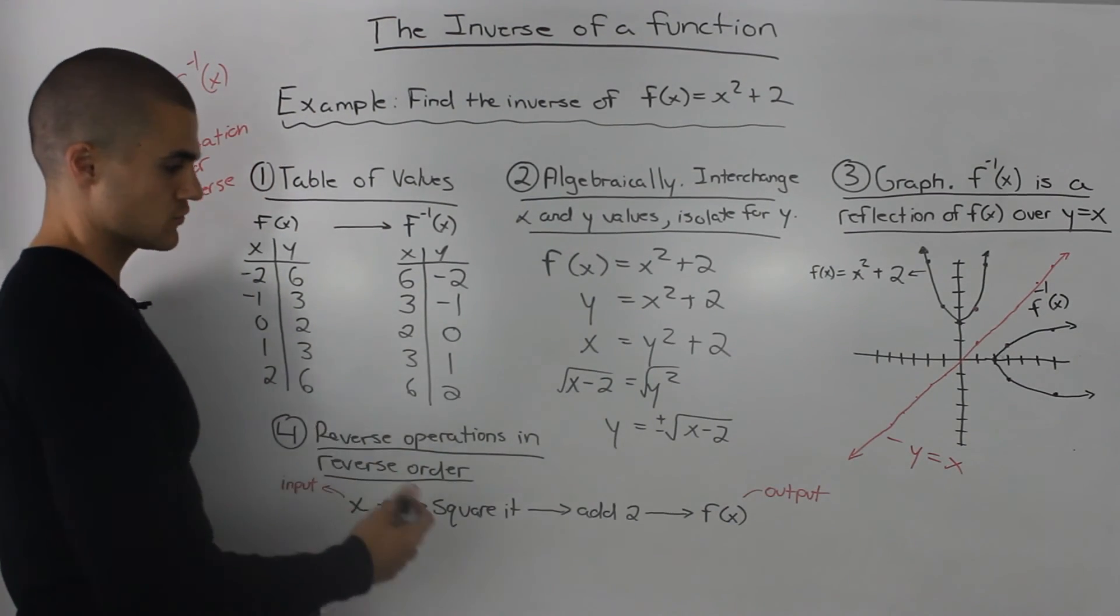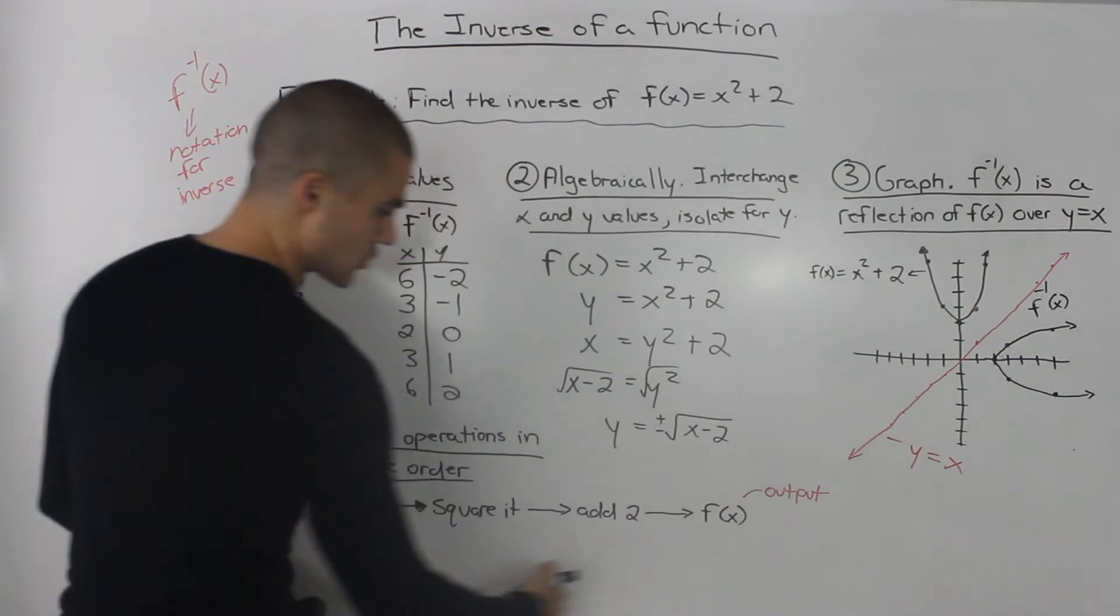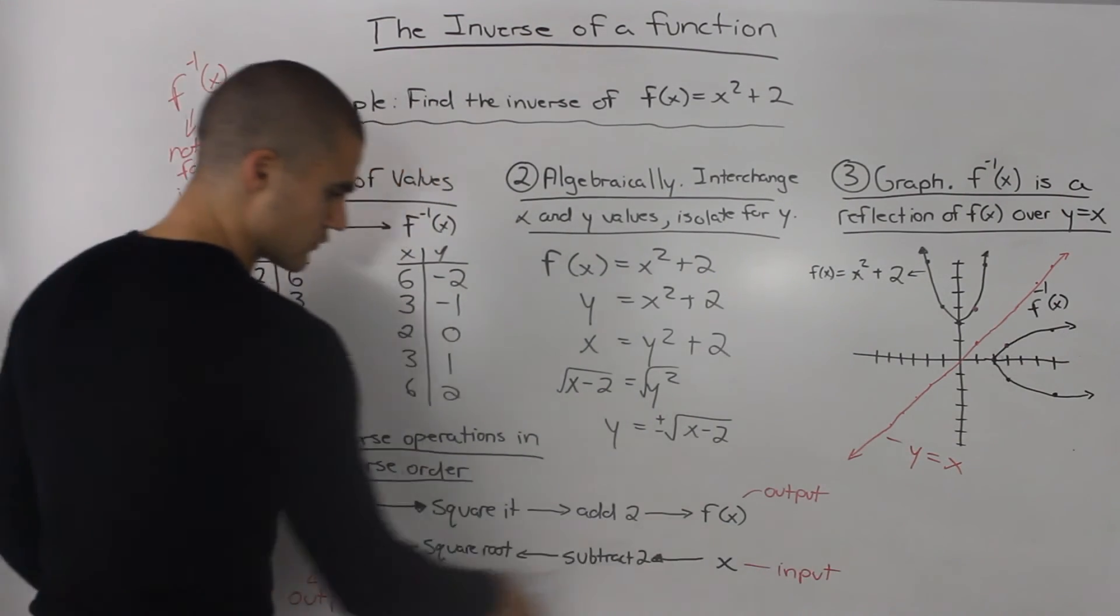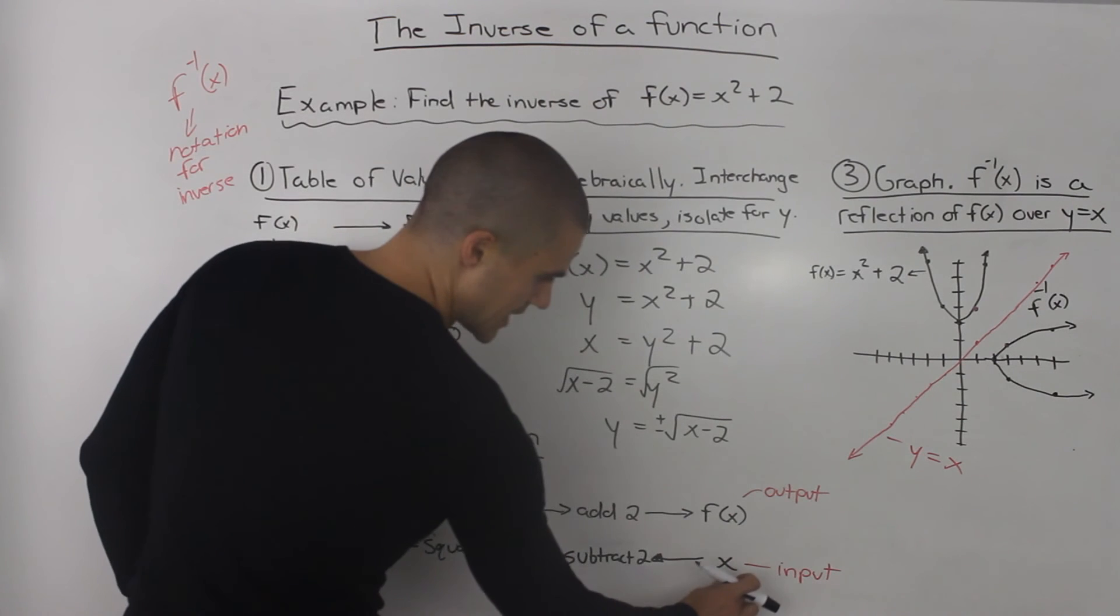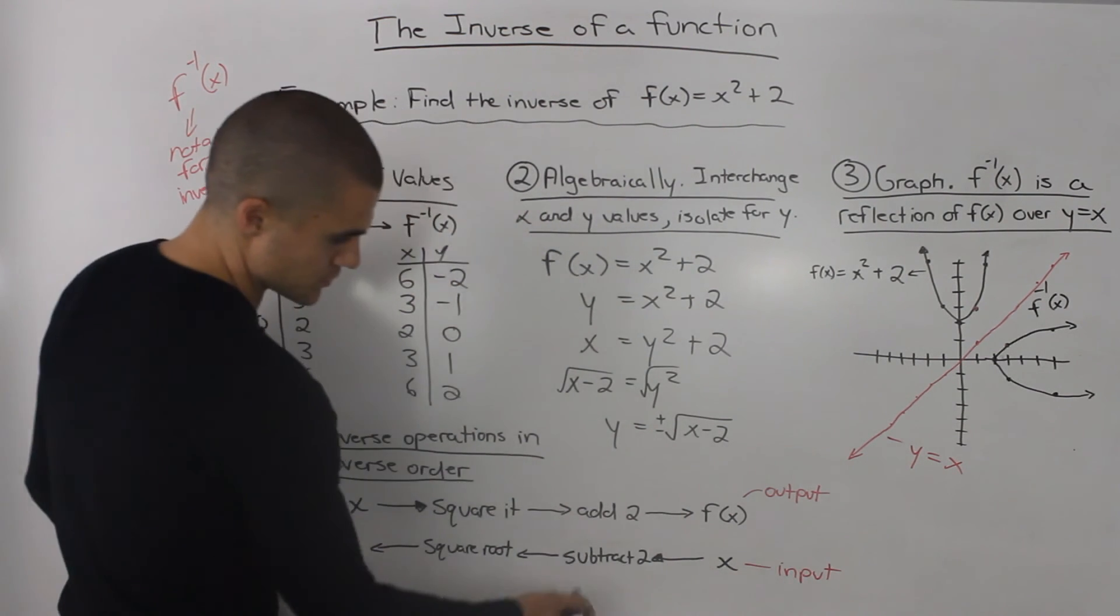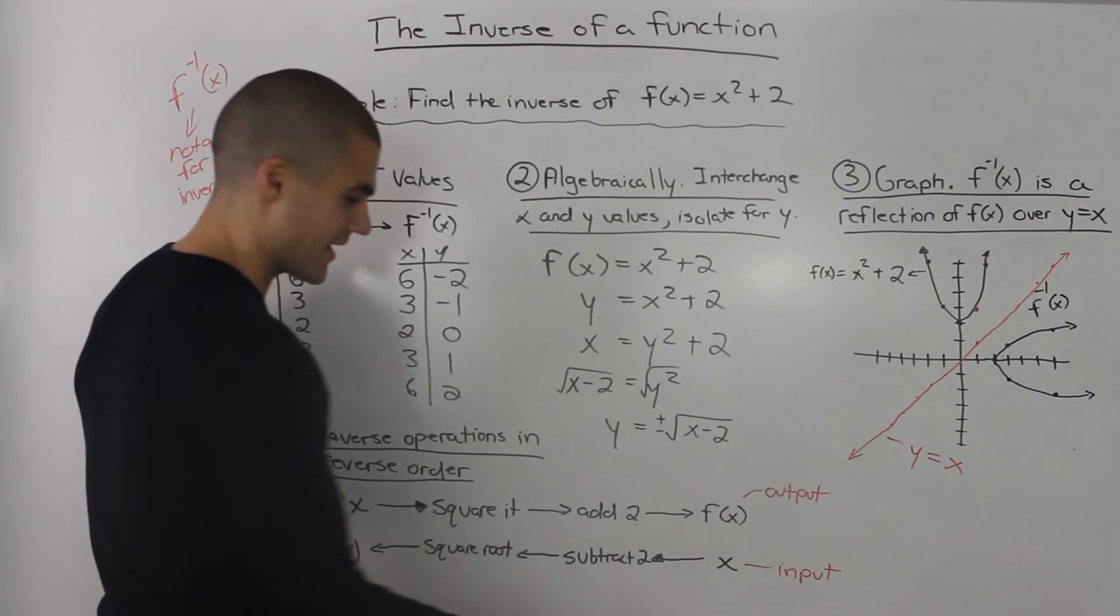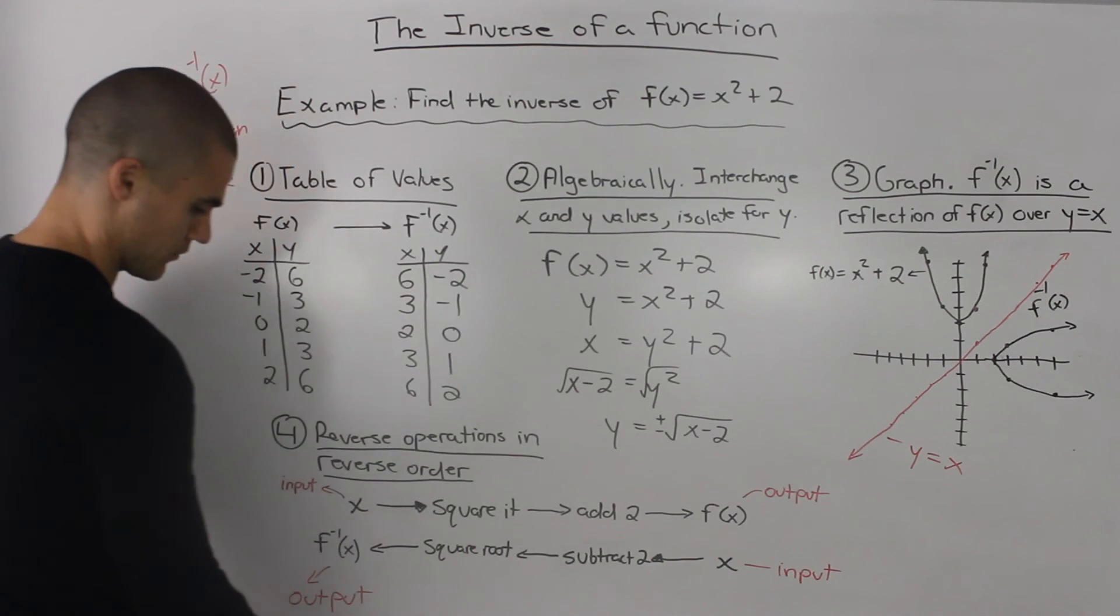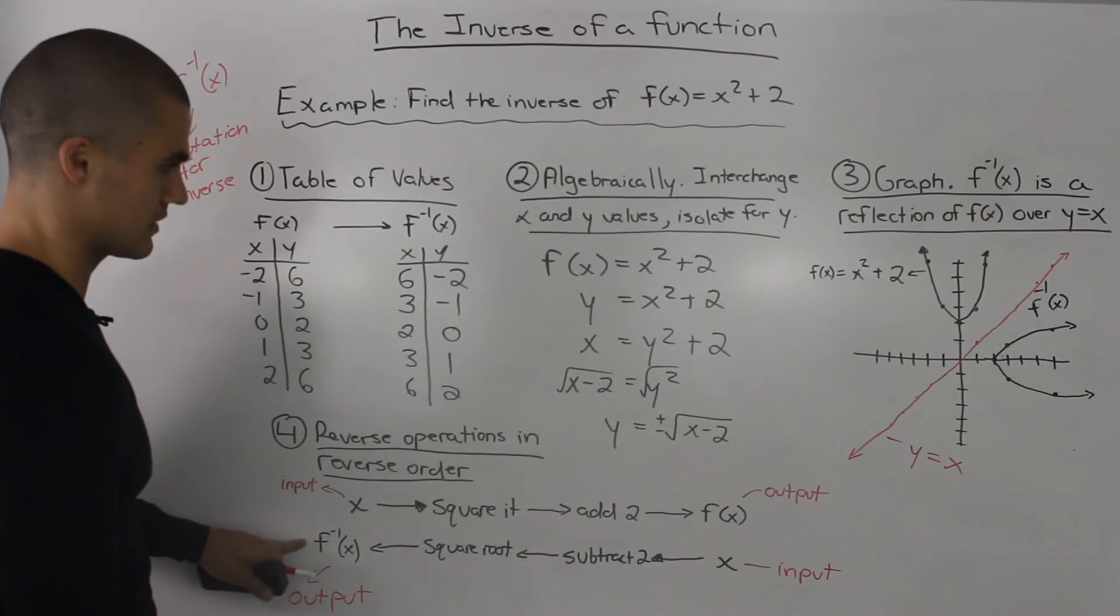Well when we take the inverse, what we do is we go in reverse order and we reverse all the operations. So I wrote out the inverse process here. So we take an input x, we subtract 2, which is the reverse operation of adding 2, and then we square root everything, and then we end up with our output, the inverse.